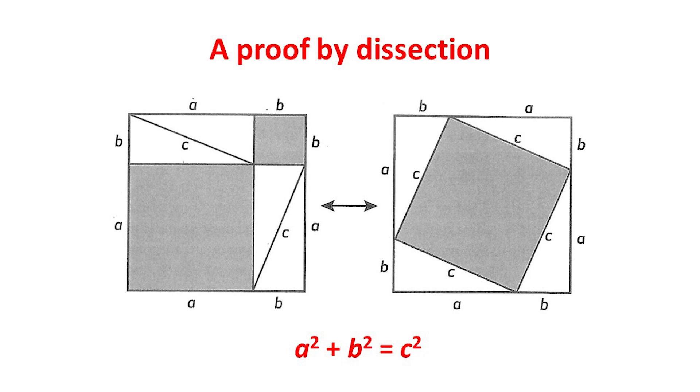Several civilizations have used dissection arguments to obtain the result. Here you can see two dissections of a square with side a plus b. And each of these dissections includes four right-angled triangles with sides a, b and c.